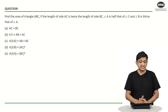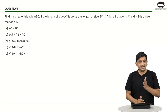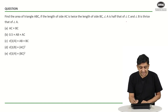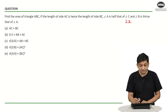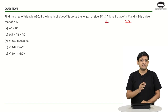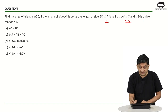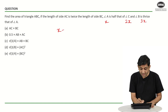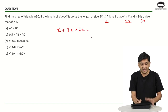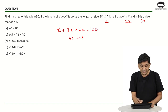A is half of C and B is thrice of A. Let's say the measure of angle C is 2x degrees. Then the measure of angle A becomes x degrees because A is half of C. B is thrice of A, which means B equals 3x. The sum of the angles is 180 degrees: x plus 3x plus 2x equals 180 degrees, giving us 6x equals 180 degrees, or x equals 30 degrees.